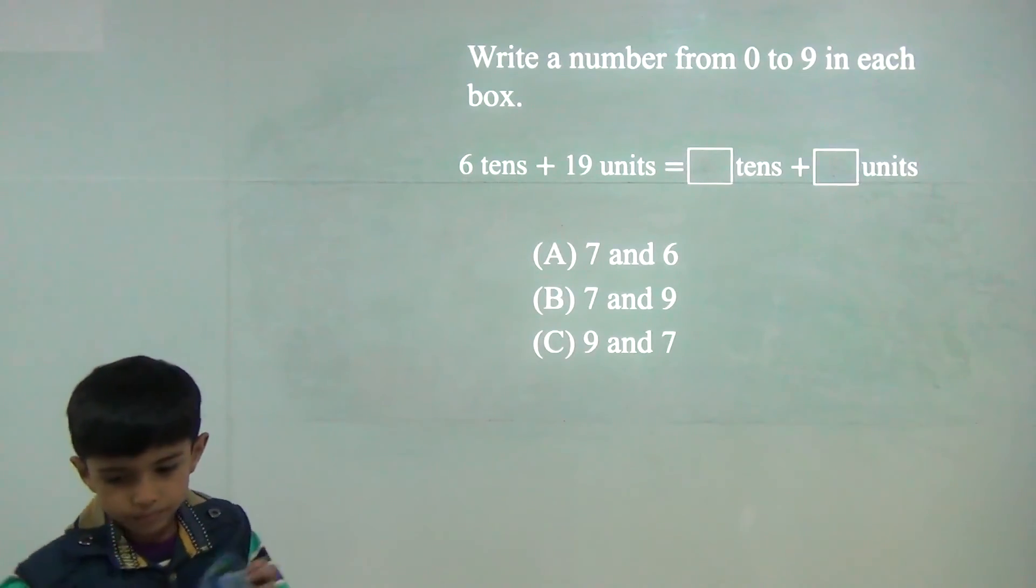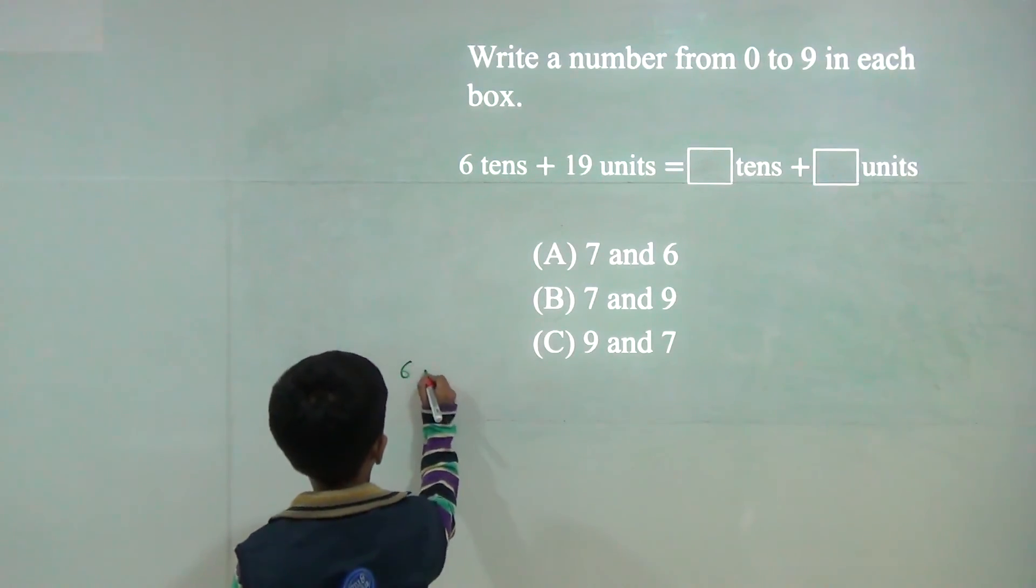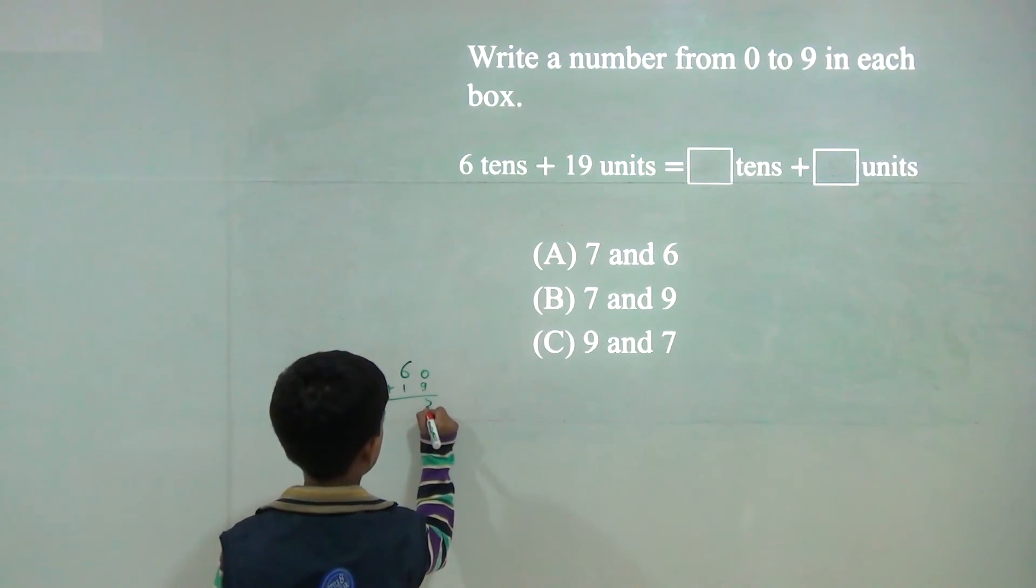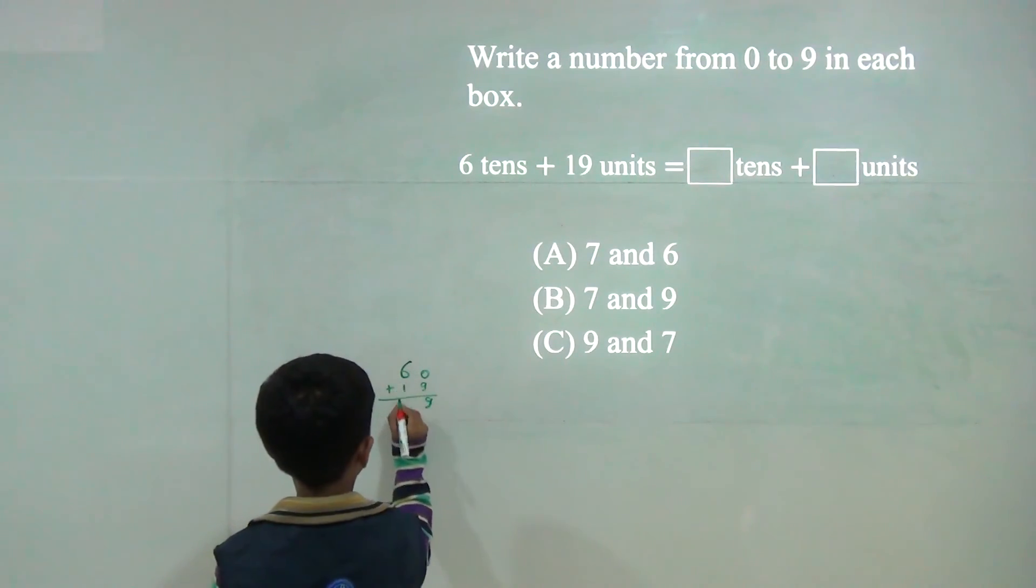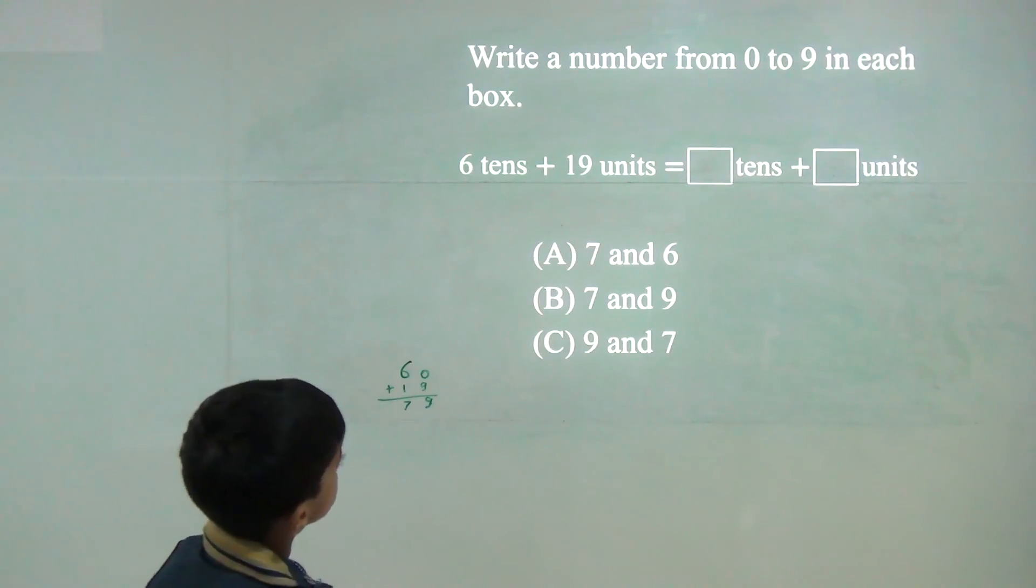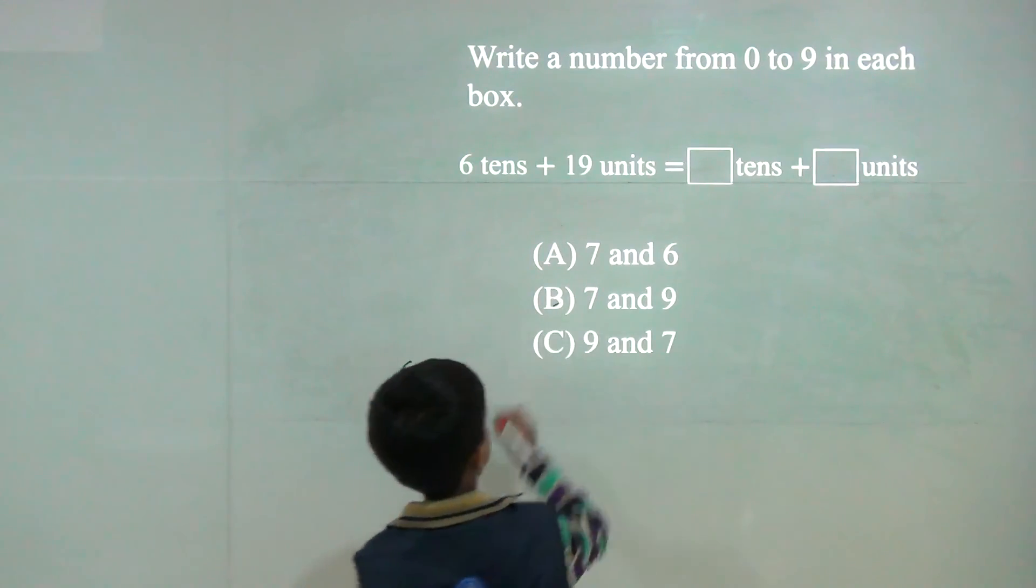Now 6 tenths. 6 tenths would be 60. 6 tenths plus 19 would be 9 and 7. So 79. 7 and 9. So answer would be B.